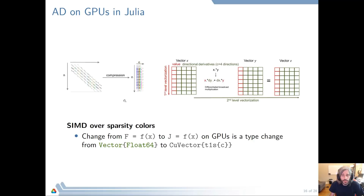Using that, we get the natural SIMD parallelization on the GPU. A vector that has only values now also has elements for each color and each direction you compute. We can evaluate the Jacobian in one go by creating a type that has a T1S type with C directions. So computing the Jacobian is really just a matter of a type change.